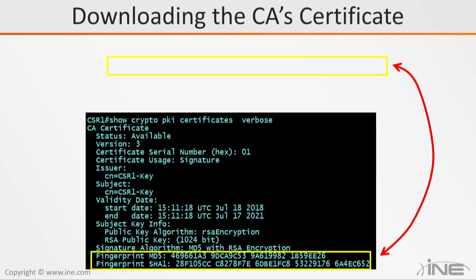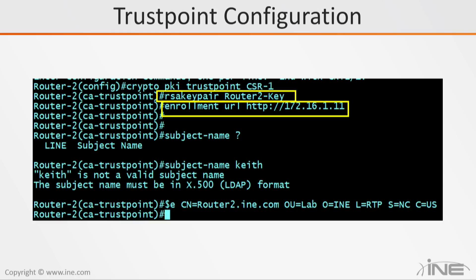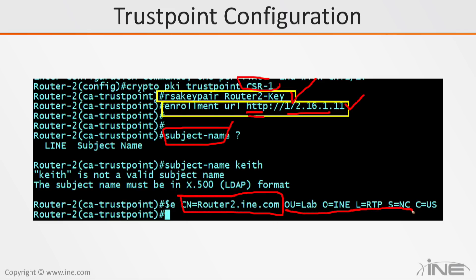So that's the absolute minimum you need to do. To recap: you create a trust point and give it whatever name you want, specify your key pair that you've already created, specify your enrollment method — most likely HTTP — and the IP address to reach the CA, and specify at minimum a subject name using the common name format, plus optionally the other X.500 fields. Once you've done that, your PKI client router is just going to sit there and not do anything.